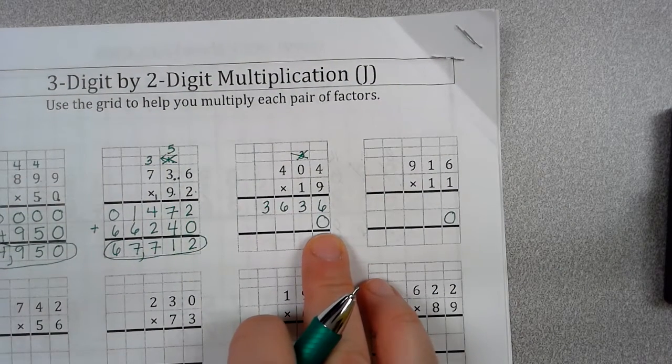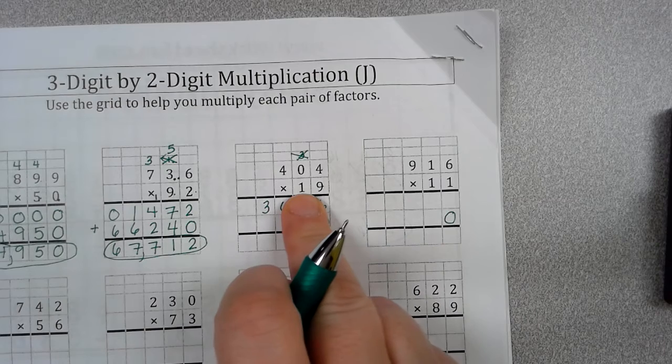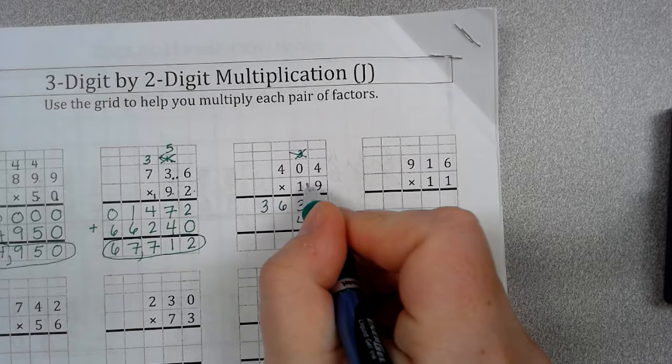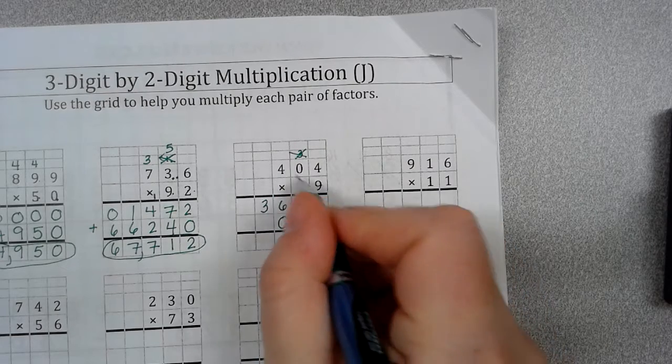And, I have a 0 here because I'm starting in my 10th place. Any number times 1 is itself. So, 1 times 4 is 4. 1 times 0 is 0. 1 times 4 is 4.